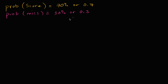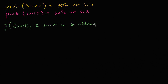Now let's say that you are going to take six attempts, and what we're curious about is the probability of exactly two scores in six attempts. I encourage you, if you get inspired at any point in this video, to pause it and try to work through what we're asking right now.